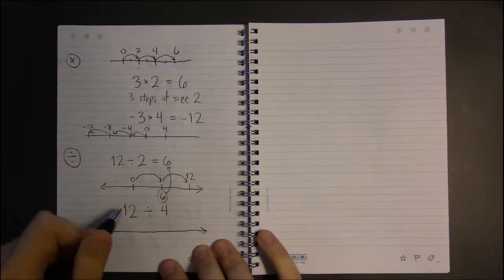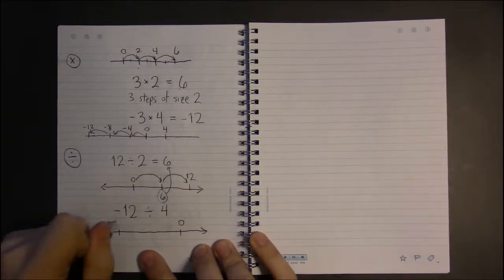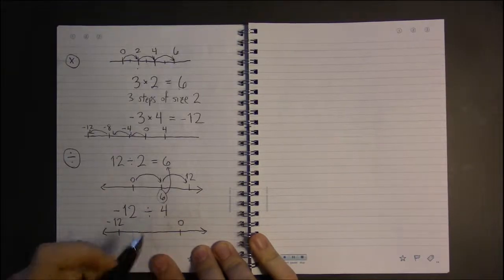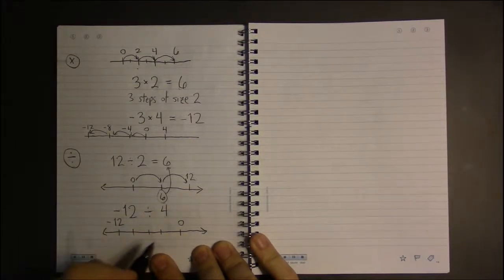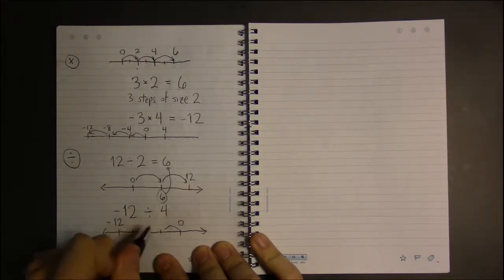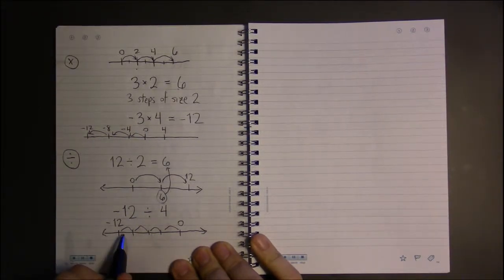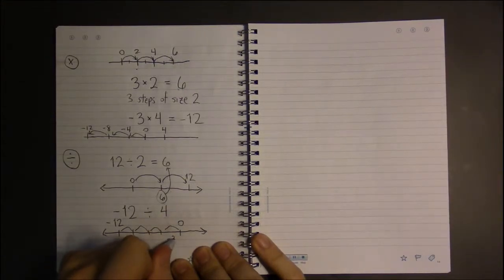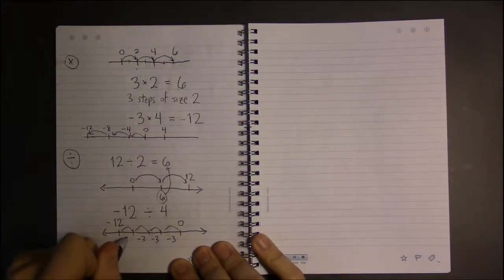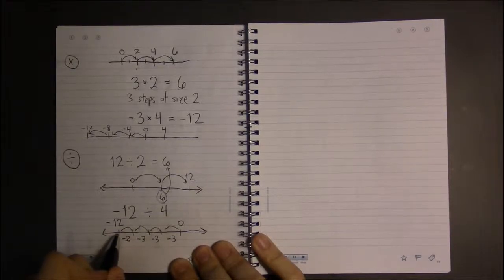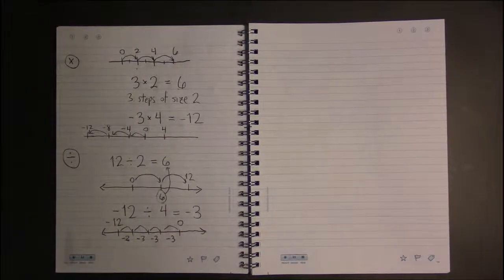And if we look at this, minus 12, so starting at 0, we're trying to get to minus 12, and we're going to do so in 4 steps, so 1, 2, 3, 4. What's the size of each of these steps if they're all equal? Well, we have to be moving at steps of minus 3. We have to be moving left 3 at each step. So, our answer is simply minus 3.